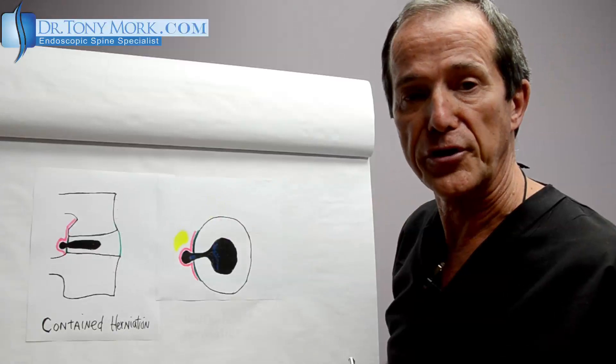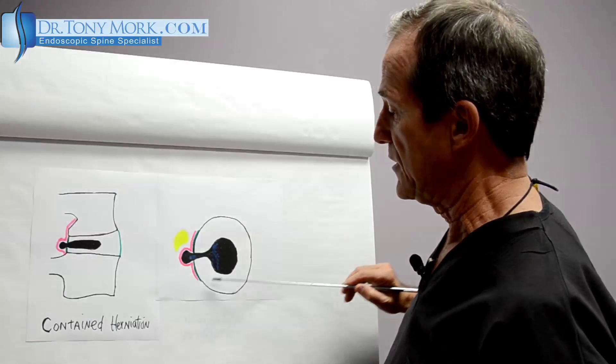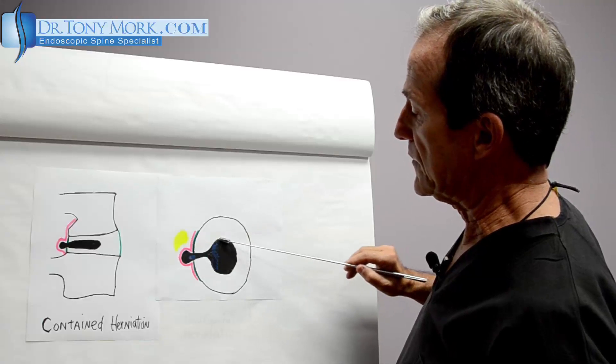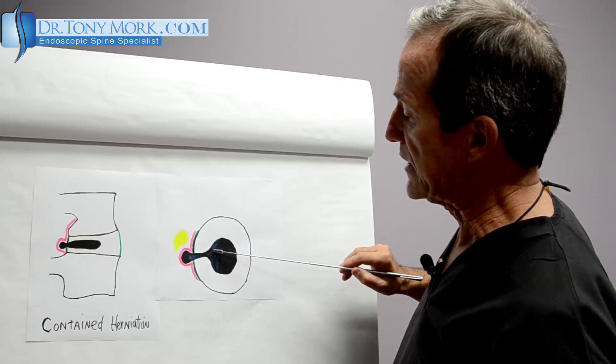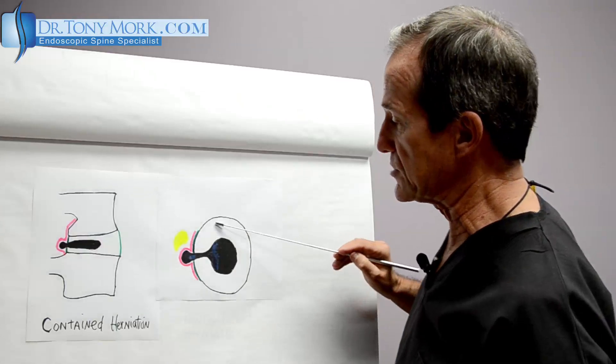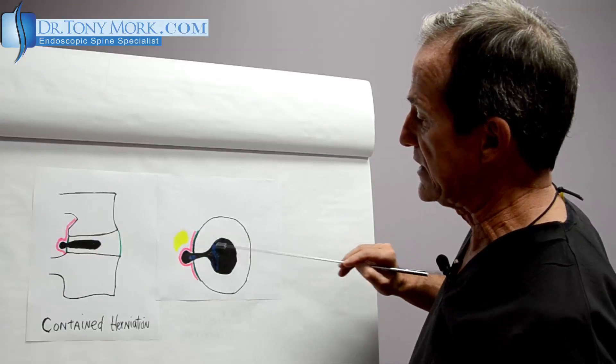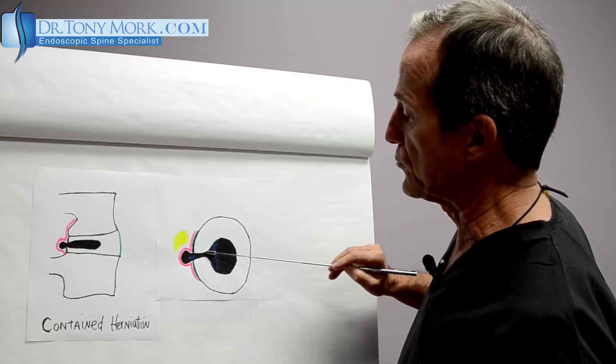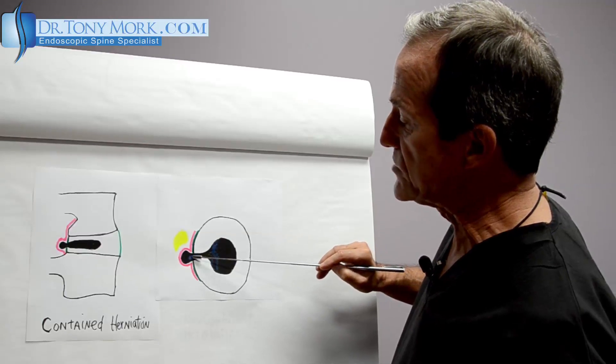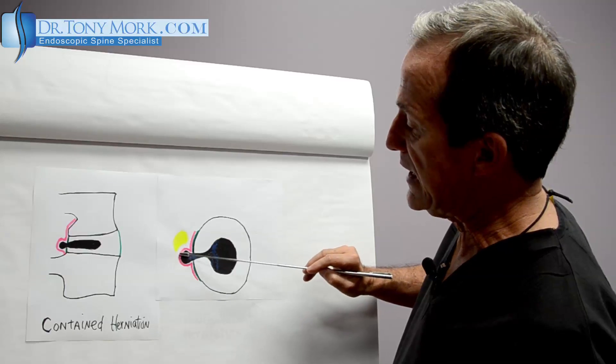This is a herniation. This is a contained herniation. So why do we say that? Well, this is the center of the nucleus. It's gone out through an annular tear. In other words, this is the annulus. The covering of the disc is the annulus. There's a rupture here through the annulus and it moves out beyond the annulus here and yet it is contained by the posterior longitudinal ligament.